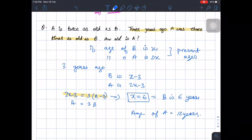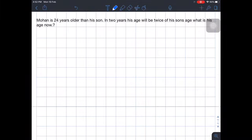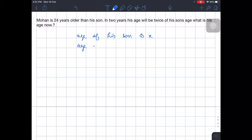So now let's do this question. Mohan is 24 years older than his son, means if age of his son is x, age of Mohan is x plus 24. So now in two years his age will be twice of his son's age. In two years means after two years, this is present age.